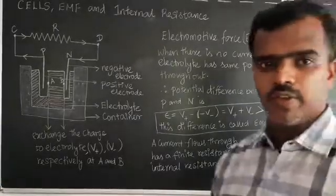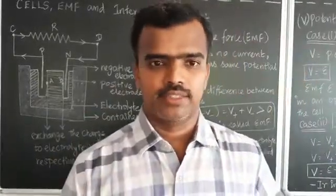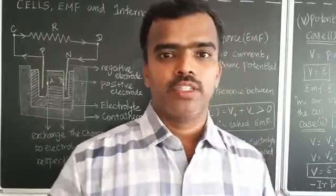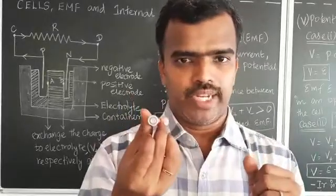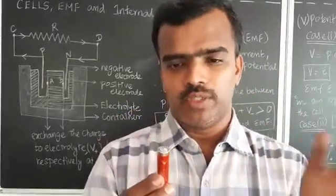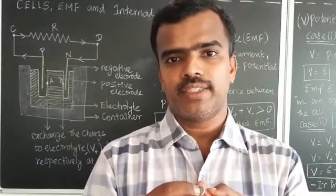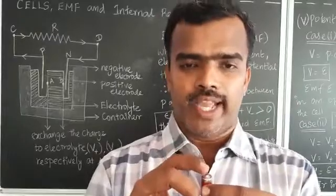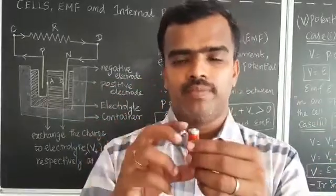Hello everyone, welcome back. Here we are going to discuss about cells, EMF, and internal resistance. Before going to this topic we should know about how a simple battery works. Here we have a simple battery — this side we have positive and this side we have negative. The positive terminal is the cathode, which is made of graphite, and this side we have the negative terminal, which is the anode made of zinc. In between the anode and cathode we have an electrolyte, basically ammonium chloride or whatever solution they use.